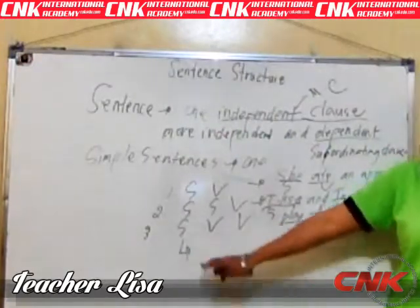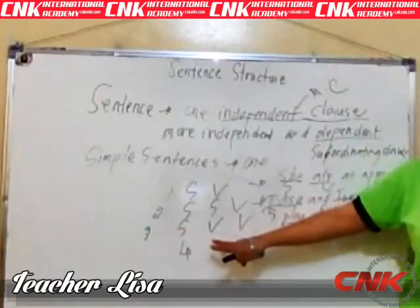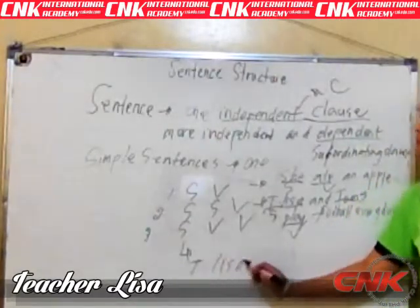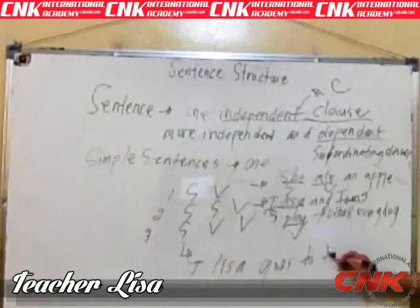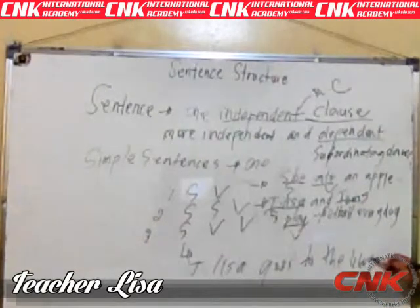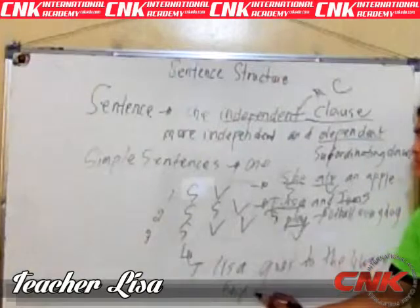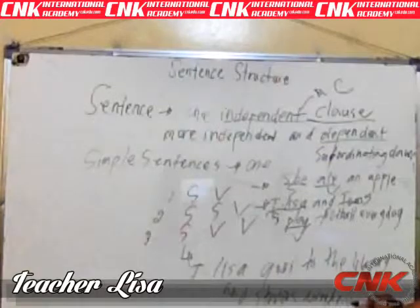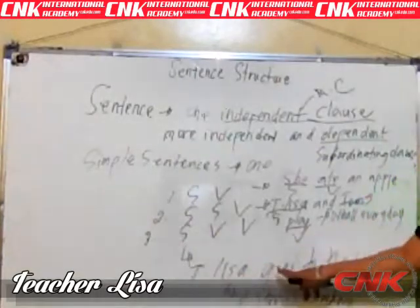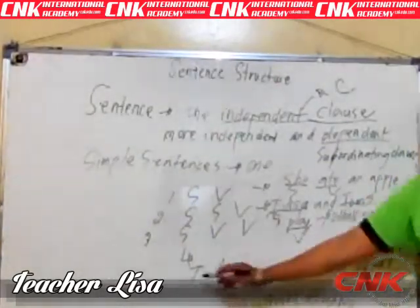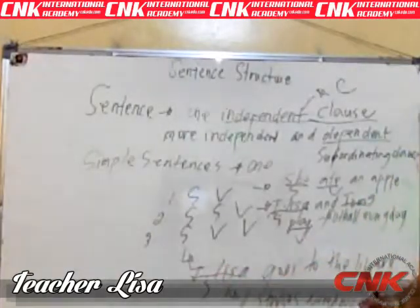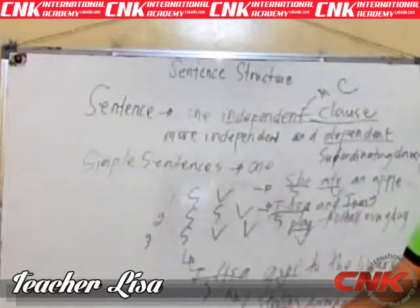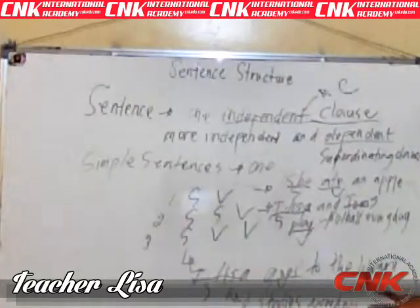Lastly, for number three, we have one subject and two verbs. Example: 'Teacher Lisa goes to the library and studies every day.' Teacher Lisa is the subject, goes is the first verb, and studies is another verb. So we have one subject and two verbs.